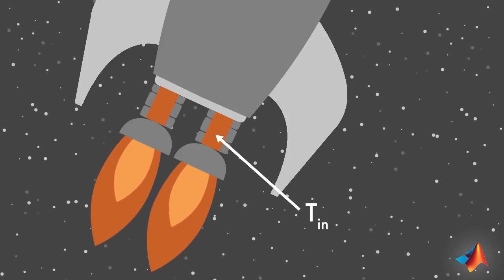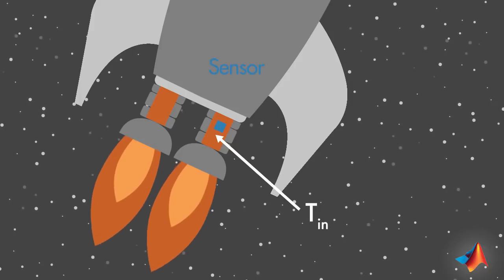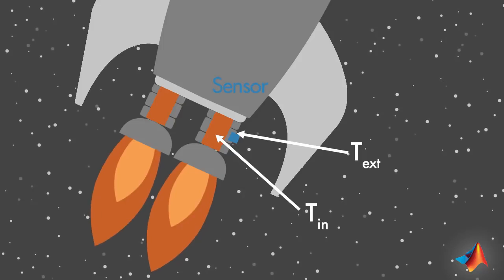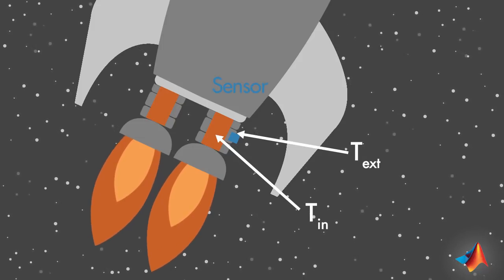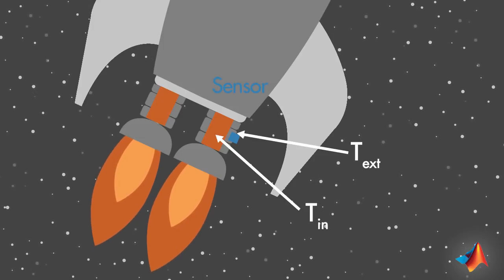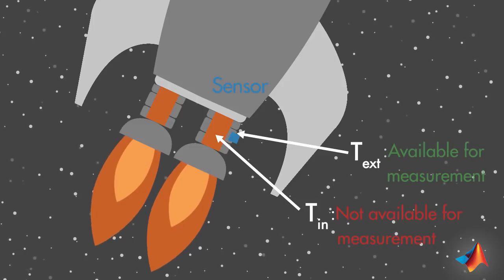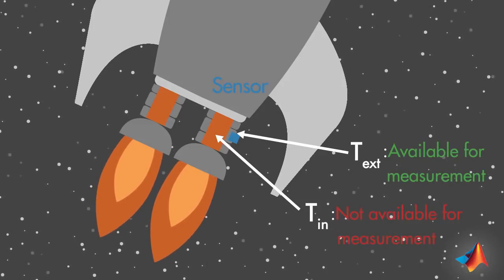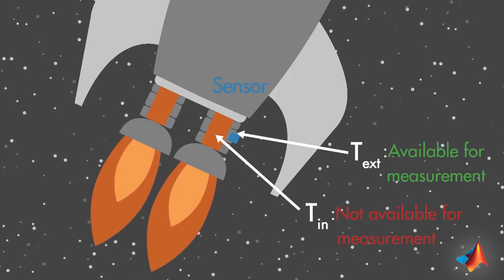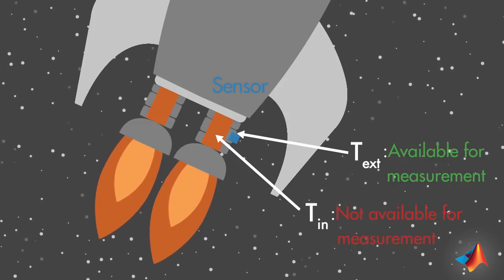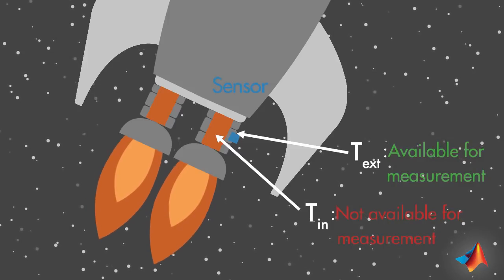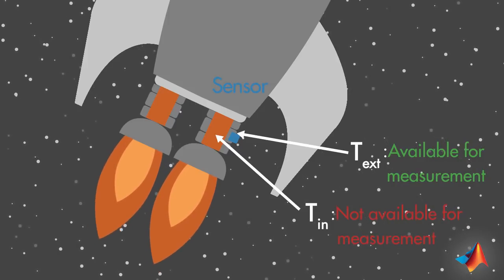This is not an easy task since a sensor placed inside the chamber would melt. Instead, it needs to be placed on a cooler surface, close to the chamber. The problem you are facing is that you want to measure the internal temperature of the chamber, but you can't. Instead, you have to measure the external temperature. In this situation, you can use a Kalman filter to find the best estimate of the internal temperature from an indirect measurement. This way, you're extracting information about what you can't measure from what you can.